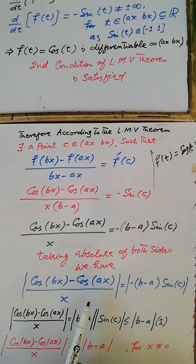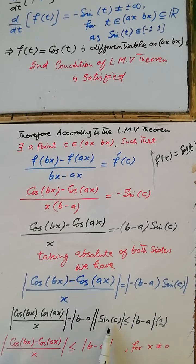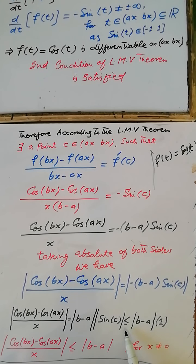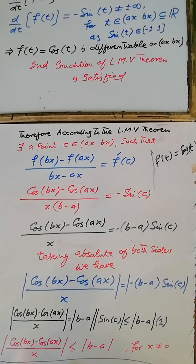Taking the absolute value of both sides: |cos(bx) - cos(ax)| / |x| = |-(b - a) sin(C)| = |b - a| × |sin(C)|. Since the range of sin(C) is [-1, 1], we have |sin(C)| ≤ 1. Therefore, |cos(bx) - cos(ax)| / |x| ≤ |b - a| × 1 = |b - a|, which is the required result.